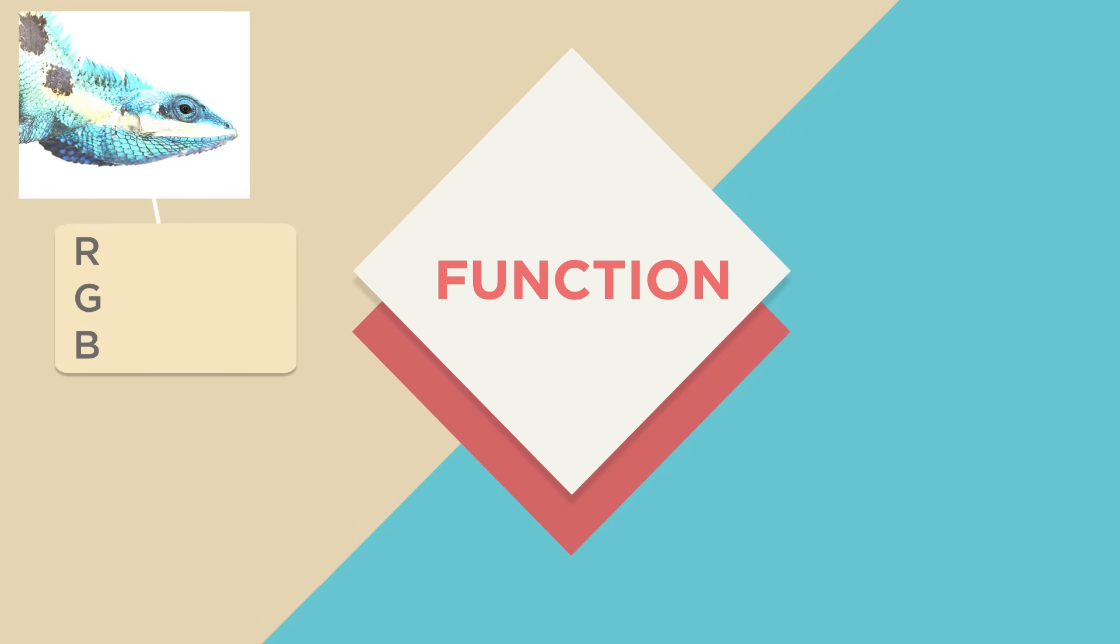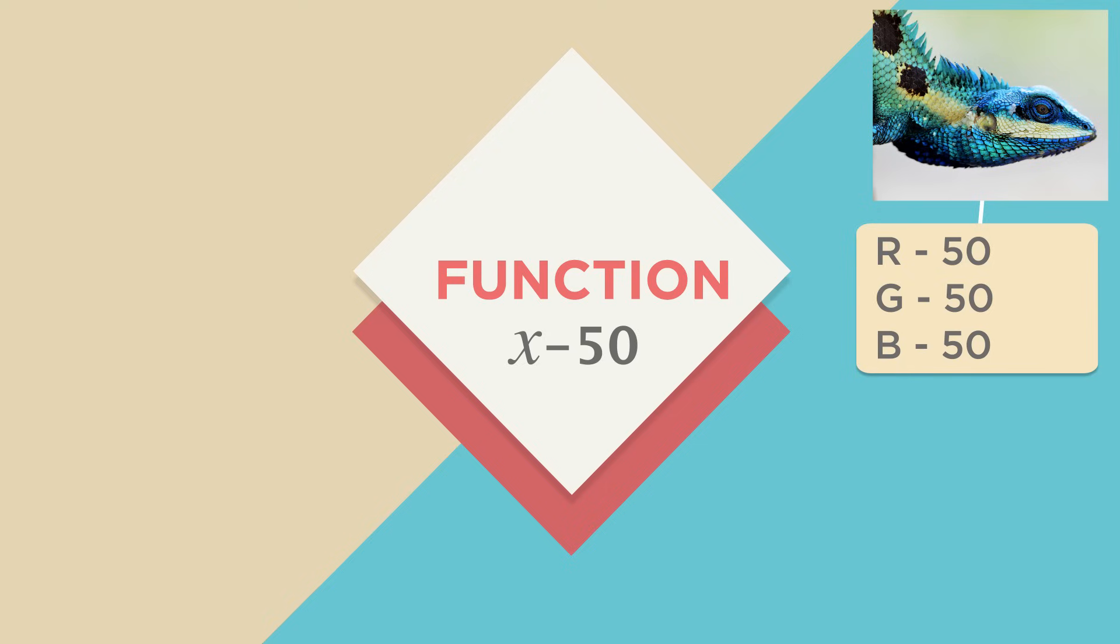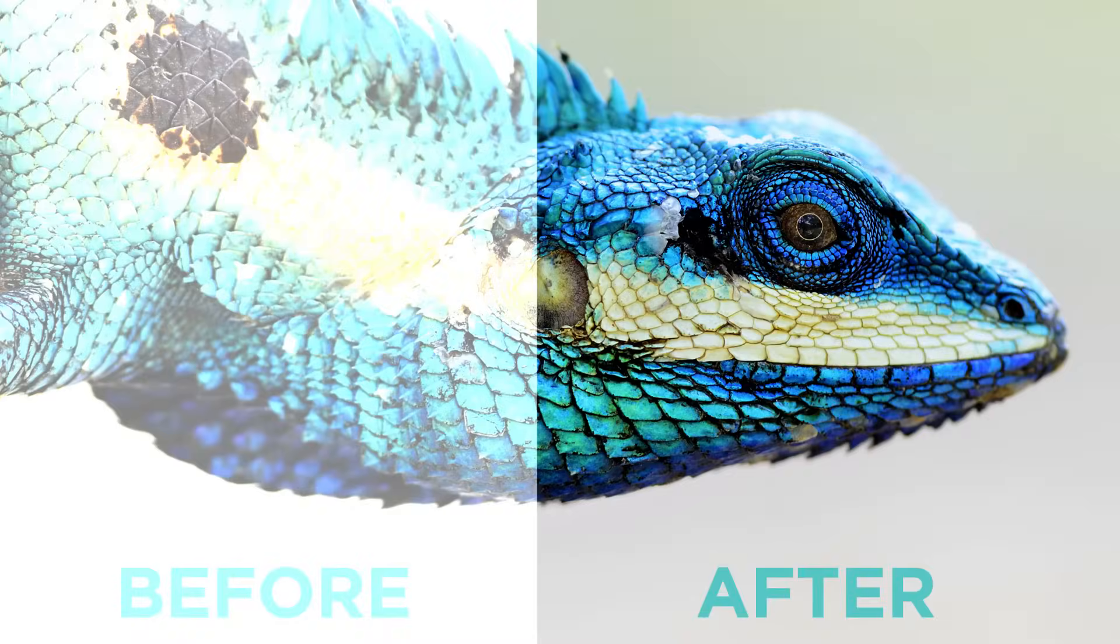Let's say you wanted to make an image darker. One way of doing that is by taking the red, green, and blue values that come in and subtracting a fixed constant from each of them - subtract 50. Obviously you can't go below zero, but you just subtract 50 from each of them and that's the output. The input is RGB and the output is R minus 50, G minus 50, and B minus 50. What you'll see is you take in an image with a certain brightness and you get out an image with a much darker brightness.